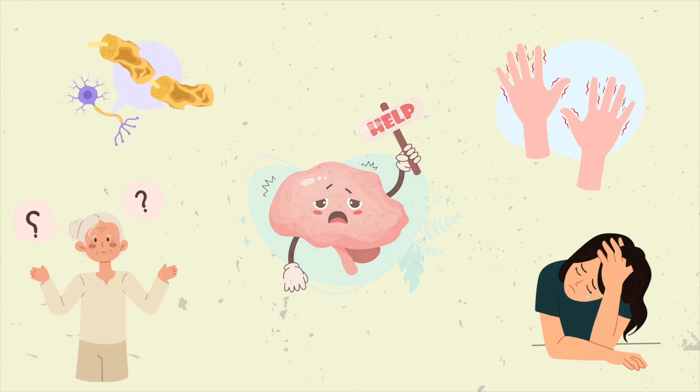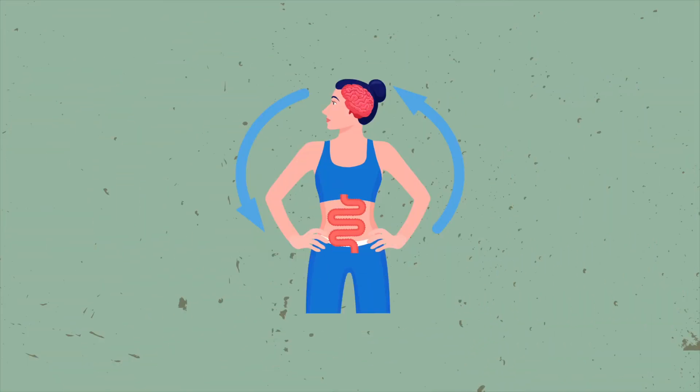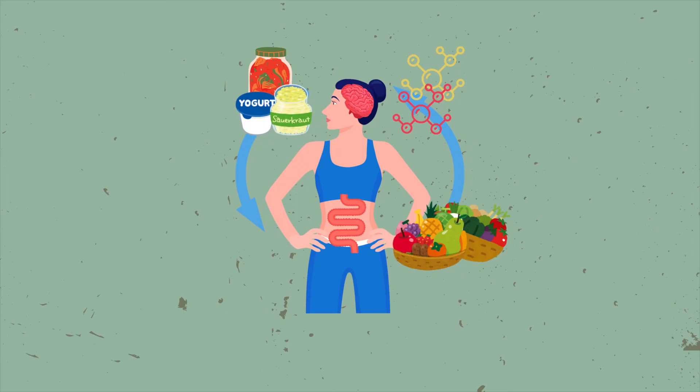The gut-brain axis reveals fascinating insights into how diet, probiotics, and other lifestyle factors can influence the microbiome and, consequently, brain health. For example, diets rich in fiber support the growth of beneficial bacteria that produce short-chain fatty acids, while fermented foods like yogurt, kimchi, and sauerkraut introduce live beneficial bacteria directly into the gut.